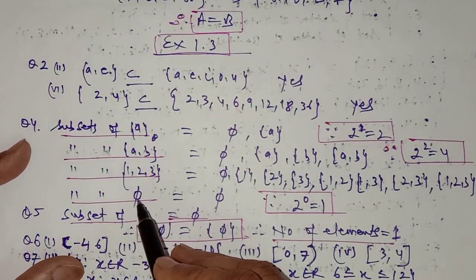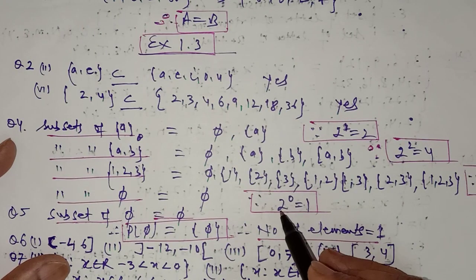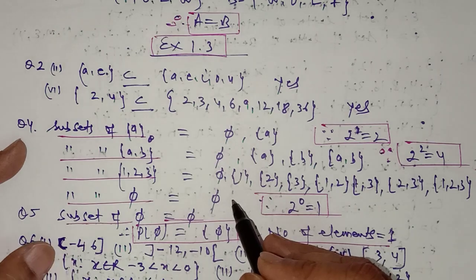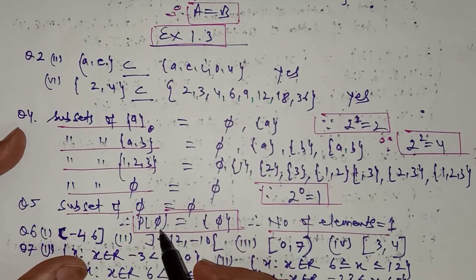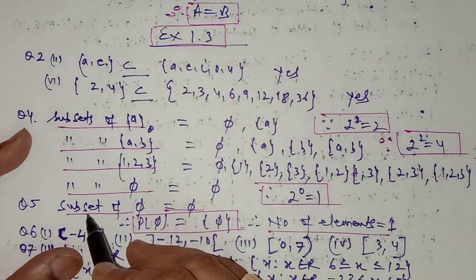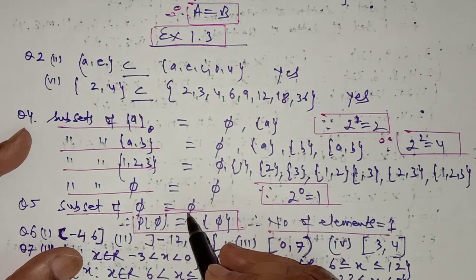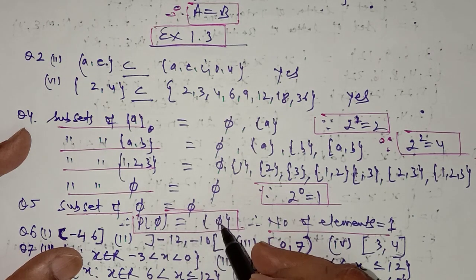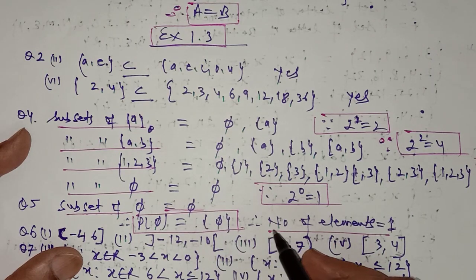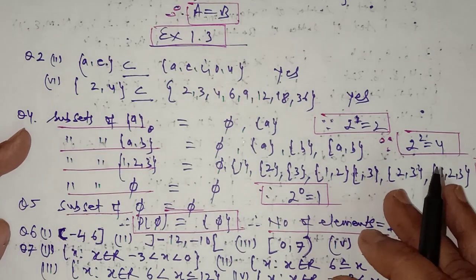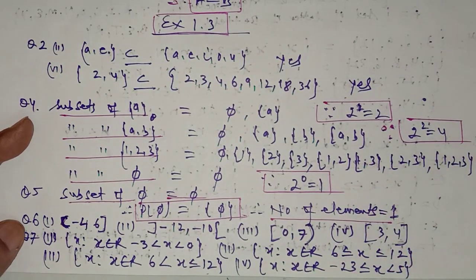For the empty set, we have 0 elements, and 2 raised to power 0 is 1, so it has only one subset, which is the empty set. In question number 5, you have to find the power set of the empty set. The power set is the set of all subsets. The power set of the empty set has only one element — the empty set itself placed in curly brackets.